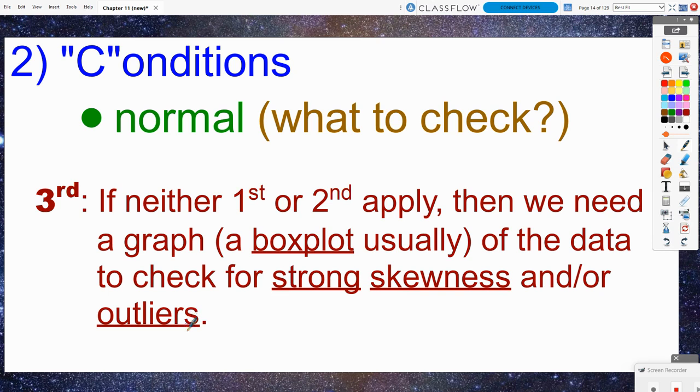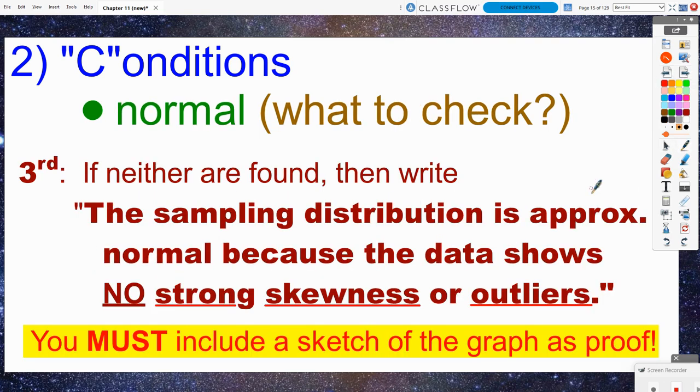Now, if you have outliers, that is game over right there. You have outliers, no go. We may not do this. But you always have to first check, do you have a big enough sample size for the central limit theorem? Because even if there are outliers present, the central limit theorem kind of washes over the fact that there are outliers because you have that large sample size. Now, if neither strong skewness or outliers are present, then we get to state the sampling distribution is approximately normal because the data or the graph shows no strong skewness or outliers. And you must include a sketch of the graph or the box plot as proof of this. You can't just state it and then move on. You have to state it and then prove that there really is no strong skewness or outliers based upon the picture that you see on your calculator. So just roughly sketch to the best of your ability what that box plot looks like.